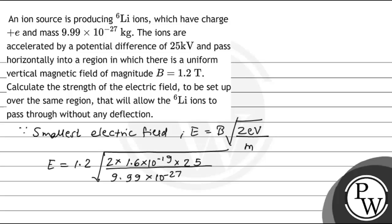So E equal to 6.795 into 10 to the power 4. The unit is volts per meter. So the answer is E equal to 6.795 times 10 to the power 4 volts per meter. Best of luck.